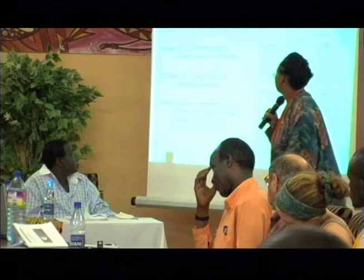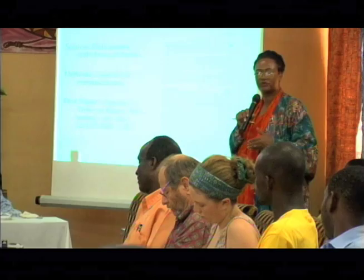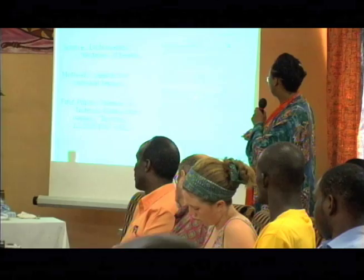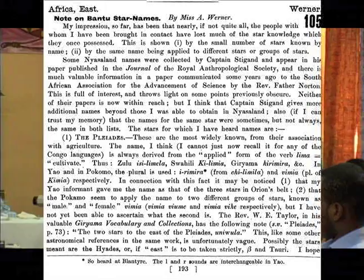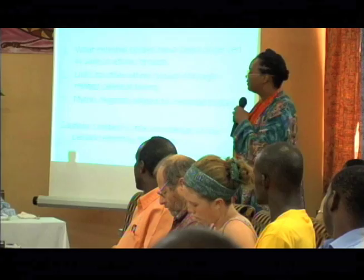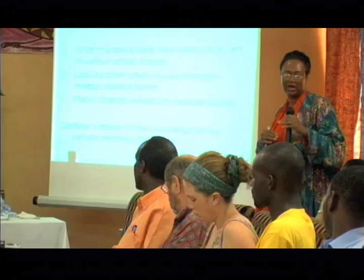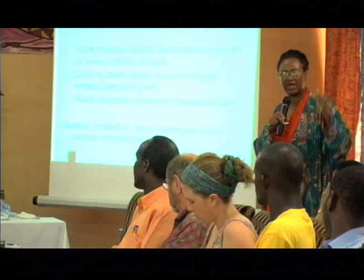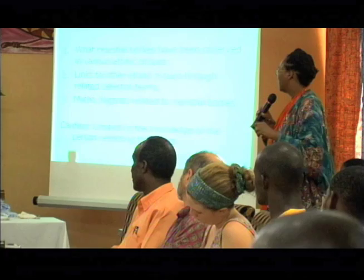Another method is to look at dictionaries and lexicons — basically collections of terms. You go through old dictionaries made a hundred years ago and search for celestial terms. The first paper found in print on this was from 1912 by Alice Warner: 'Note on Bantu Star Names,' just a couple of pages long. From this you can learn what celestial bodies have been observed by various ethnic groups, compare terms across nearby groups to find linkages, and sometimes find the legend behind the term right in the dictionary.